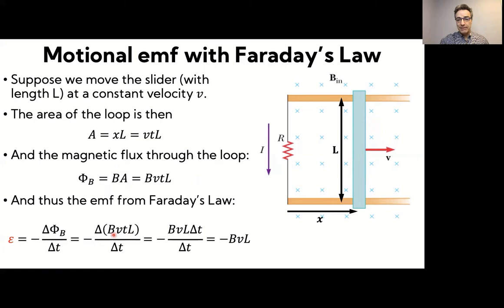Now, the magnetic field is constant. We're saying we're pulling this out at a constant velocity. And so also the length of that slider is constant. So that means it's these constants here times delta T and delta T cancels out. So we find that this EMF that's induced is minus BVL. So this we get from Faraday's law.